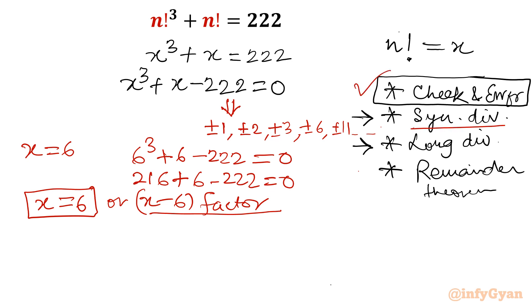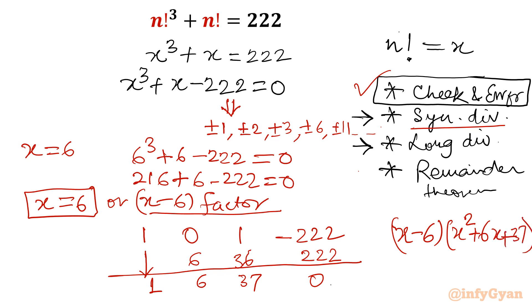So x equal to 6 is verified. Now let's solve this by synthetic division. So x equal to 6. Let me write all the coefficients: 1, 0, 1, minus 222. Then I will put one line over there. Leading coefficient as it is. Now I will multiply. 6 times 1 is 6. 6 times 6 is 36, so it will become 37. 37 times 6, that would be 222, so we get 0.